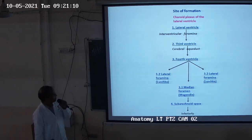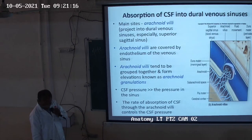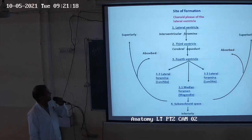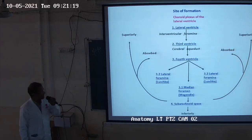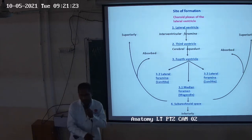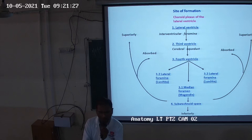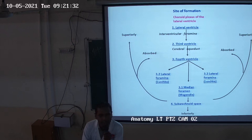Through foramen of Luschka it enters the lateral parts, and through foramen of Magendie it enters the subarachnoid space, and inferiorly enters the spinal cord. Absorption of the CSF occurs via the arachnoid villi, which are mostly present in the superior sagittal sinus.